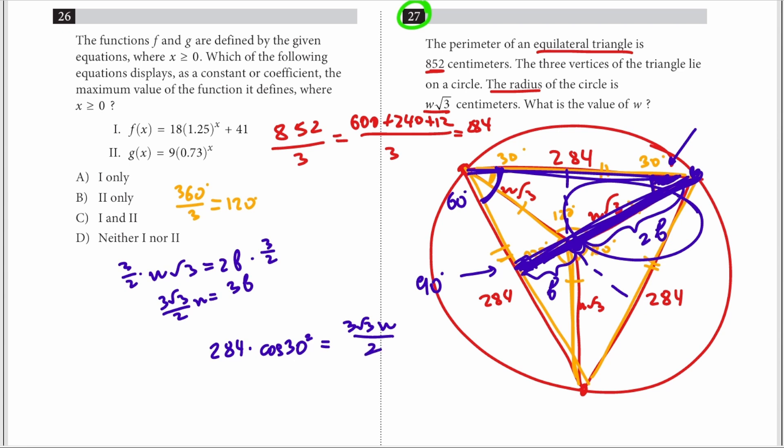So 284 times √3 over 2 is equal to 3√3w over 2. Cancel, cancel, cancel, cancel. So you get 284 is equal to 3w, or w is equal to 284 over 3, which is the answer.